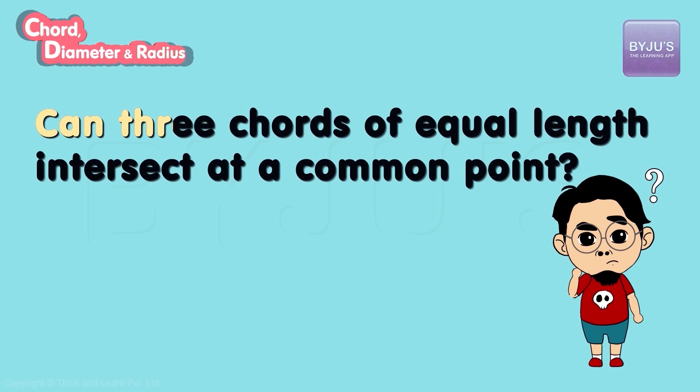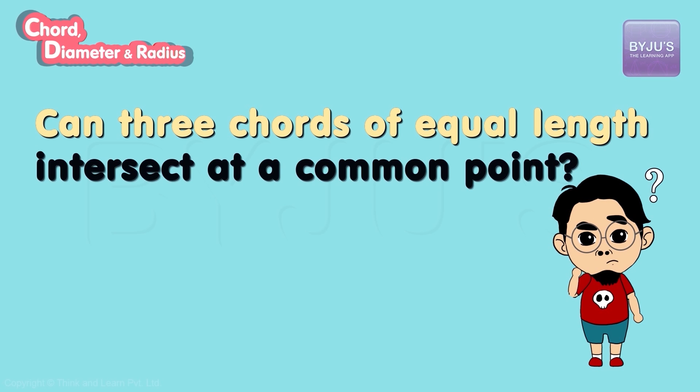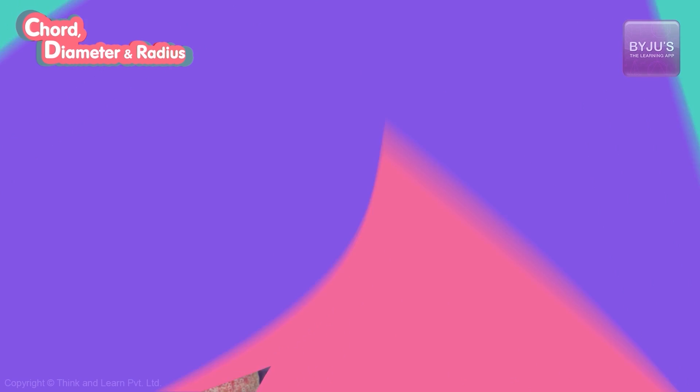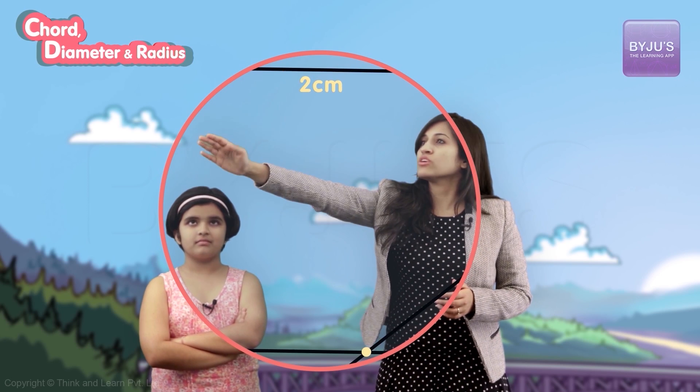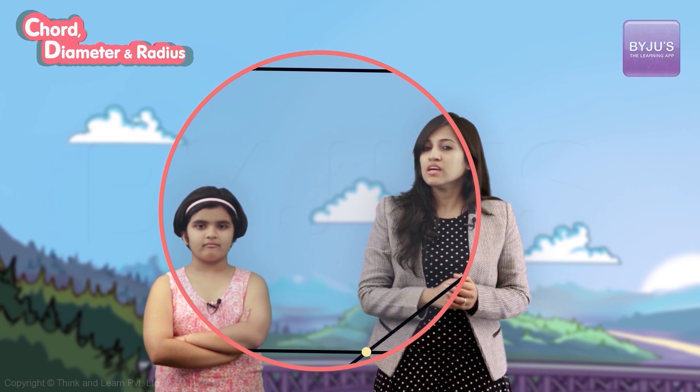Now let's do a tougher task. I want to somehow make three chords of equal length intersect at a common point. This is a circle of radius 4 centimeters. This is one chord of 2 centimeters. I can make another chord of 2 centimeters and make them intersect at a particular point — that's pretty simple. Now here comes the tricky part: let's bring one more 2-centimeter chord. But where do I place it? Maybe like this — but I don't get a common point of intersection.